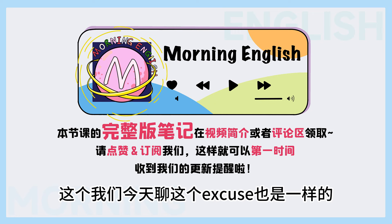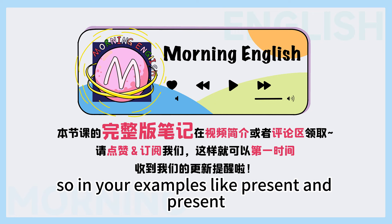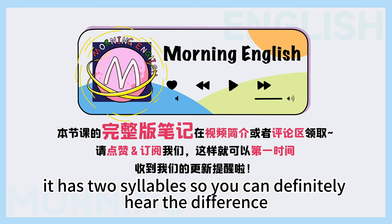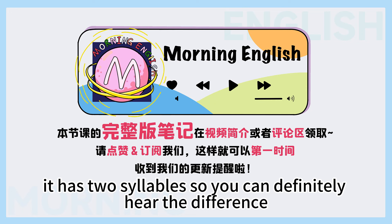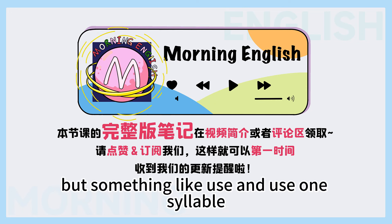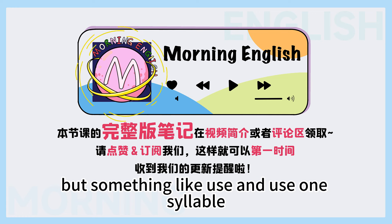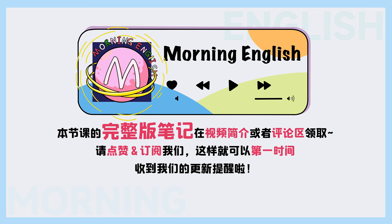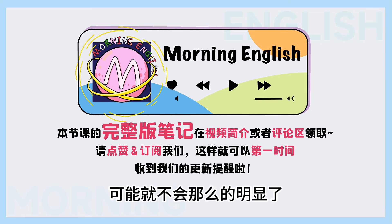这个我们今天要聊的这个excuse也是一样的。In your examples like 'present' and 'present,' it has two syllables, so you can definitely hear the difference. But something like 'use' and 'use' — one syllable — so the change is that the S becomes a Z sound. 这个可能就不会那么的明显了。